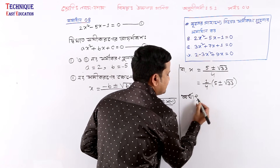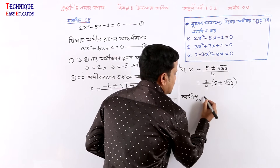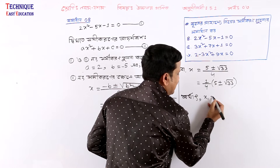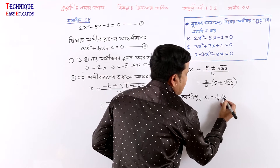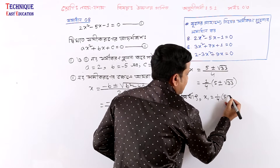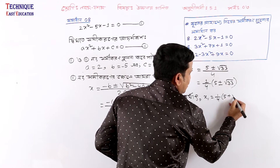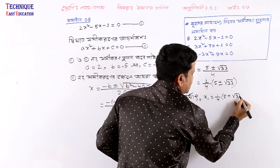Here x1 is equal to 1 by 4, and 5 plus root 3.